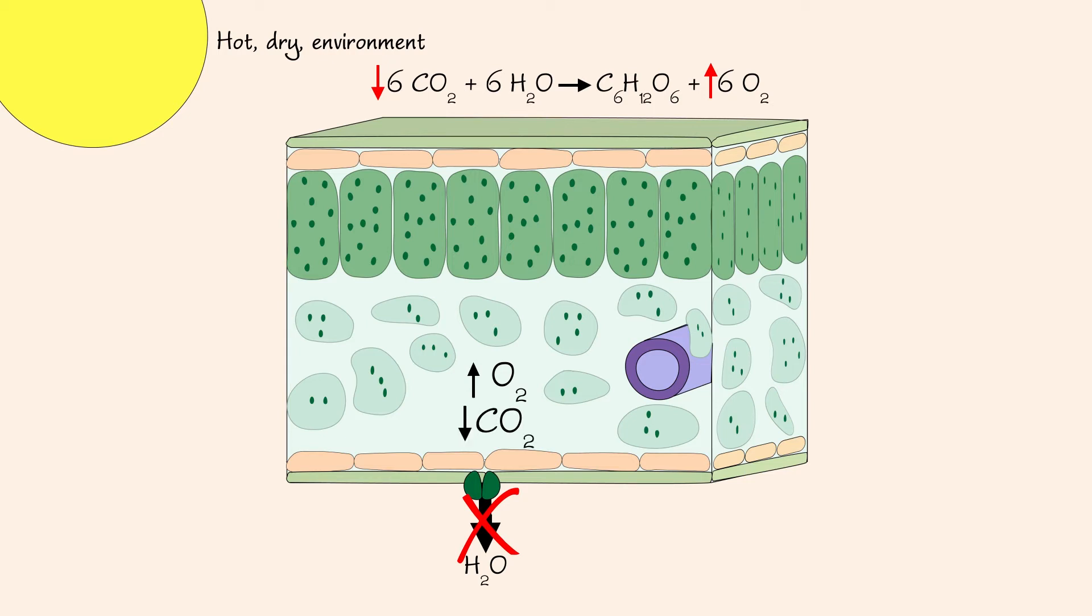Now, let's discuss the consequences of having increased oxygen within the leaf by examining the chloroplast of a palisade cell.